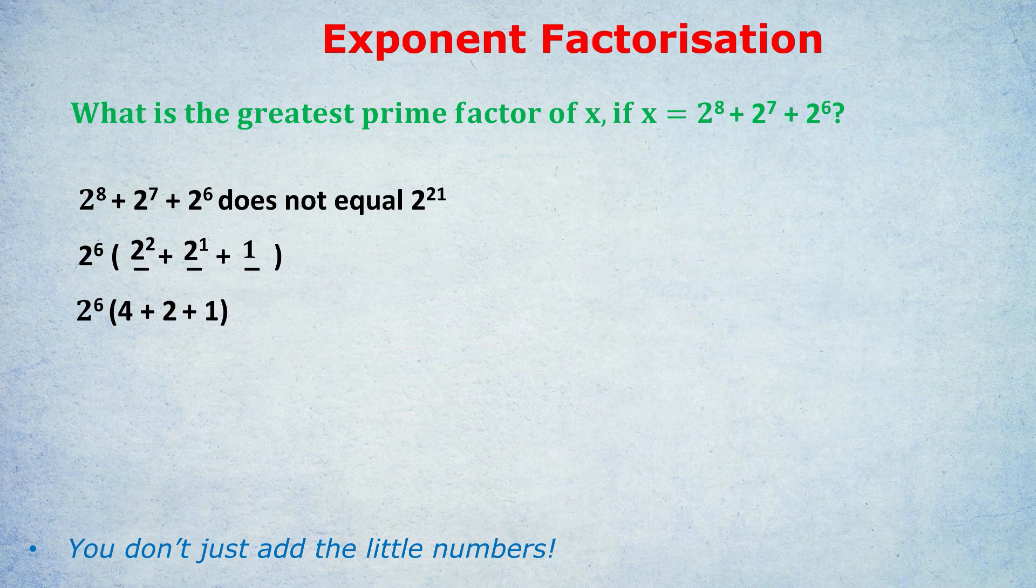It's a bit like if I give you the fraction 2 over 4, you don't hesitate to call that 1 over 2. Same thing with exponents. We're going to factorize and simplify regardless of what the question is. 4 plus 2 plus 1 is 7. So it becomes 2 to the 6 times 7.